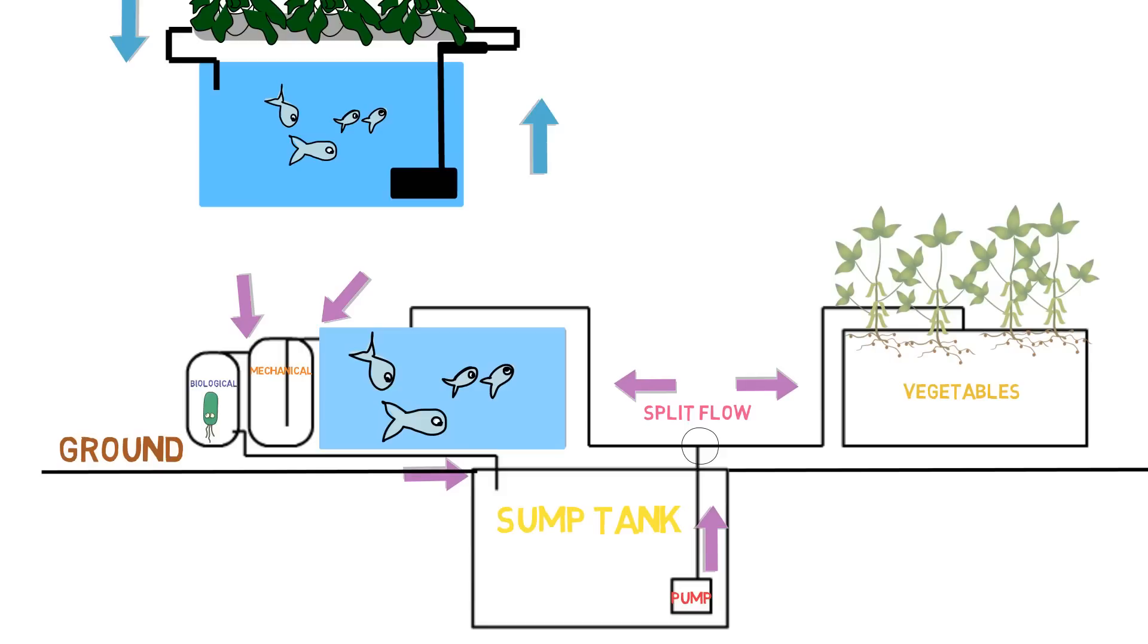But as long as you split the flow and have your filtration coming out of the outlet from the fish tank, then everything else is pretty much customizable how you want. But this is the advanced setup at the highest level in aquaponics.